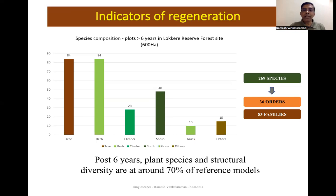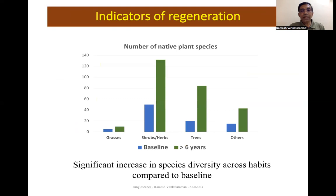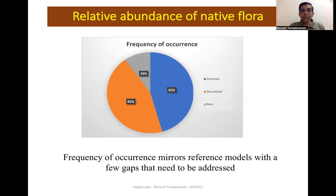Looking at outcomes, a detailed survey of sites under restoration for more than six years, totaling about 600 hectares, found about 270 species across 36 orders and 83 families — a very good level of diversity at around 70 percent of reference models. There is good structural diversity in addition to species diversity, representative of the ecosystem. Across all plant habits there is almost a two-and-a-half times increase from baseline. In terms of relative abundance, 45 percent of species were found commonly, 45 percent occasionally, and 10 percent rarely.